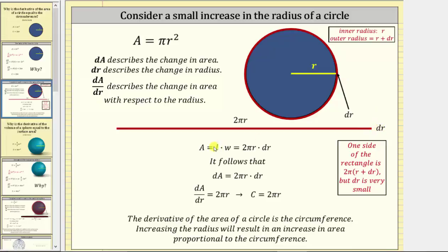Because the area of a rectangle equals length times width, the area of the red ring is equal to two pi r times differential r, which represents the change in the area. Therefore we have dA equals two pi r times dr. From this equation, if we divide both sides by dr, we have dA/dr, which is equal to the derivative of A with respect to r, equals two pi r, which is the circumference of the circle.